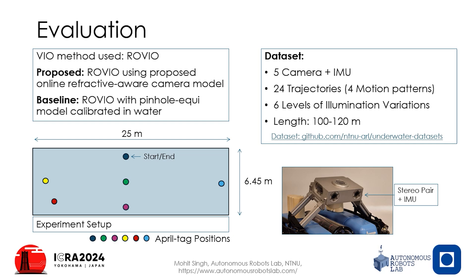For evaluation, we deploy an underwater robot with an AlphaSense 5 camera and IMU setup to record a dataset of 24 trajectories with varying conditions. The image rectification using the proposed camera model is fed into ROVIO to obtain the odometry solution, which is compared with odometry from images rectified using an equidistant model calibrated in water.